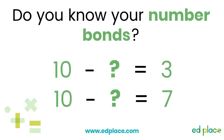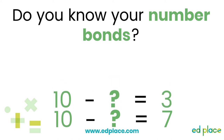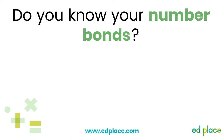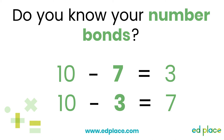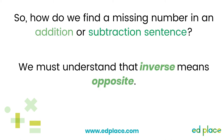A really useful tool for today's lesson is number bonds. Number bonds are pairs of numbers which add up to a certain total. For example, if you know 3 add 7 equals 10, you can use this knowledge to create the inverse subtraction sentence, which would be 10 take away 7 equals 3, or 10 take away 3 equals 7. This is called the inverse — inverse means opposite, so subtraction is the inverse of addition. Once we know this, we can use it to find a missing number in an addition or subtraction sentence.